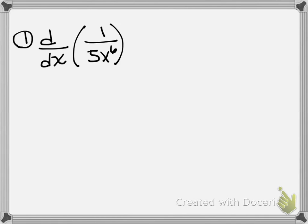So first, let's take the derivative of 1 over 5x to the 6th. So we need to be writing this in terms of functions that we know how to take the derivative of. Yes, we know how to take the derivative of x to the 6th, but it is wrapped up inside of another function.